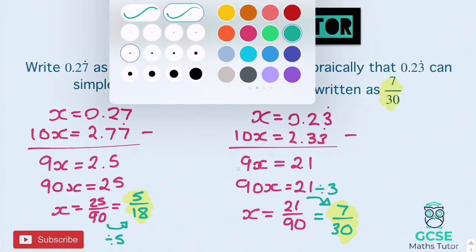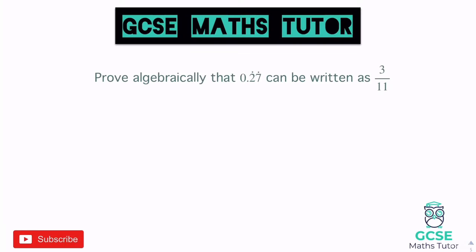Let's look at something slightly different. This question says: prove algebraically that 0.27 can be written as 3 over 11, with the recurring dots above both the 2 and the 7. That means there are two recurring decimals — a recurring pattern of 2s and 7s. When there are two dots, they indicate the start and end of the pattern: 2, 7, 2, 7 just keeps going. We follow the same approach: x equals 0.27.